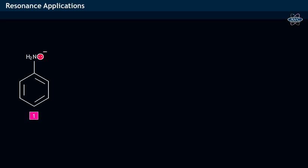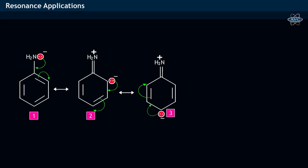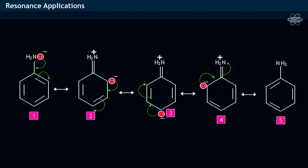In aniline, the lone electron pair on nitrogen in NH2 involves in resonance with the pi bond of the benzene ring and thereby results in the formation of resonating structures shown.